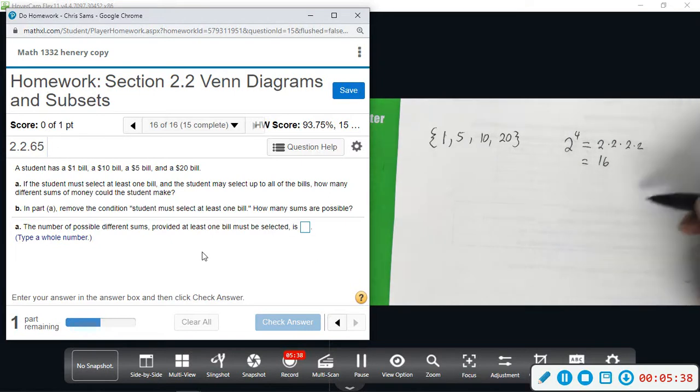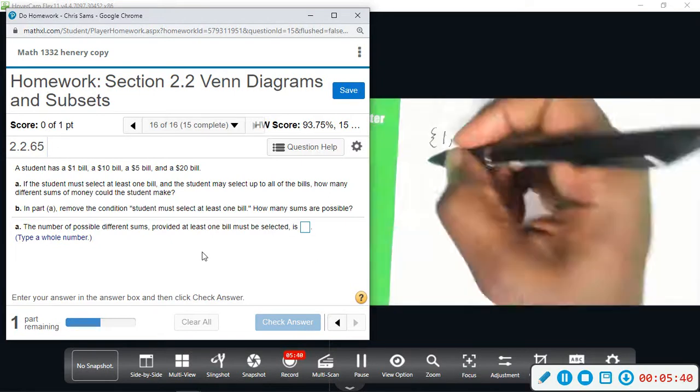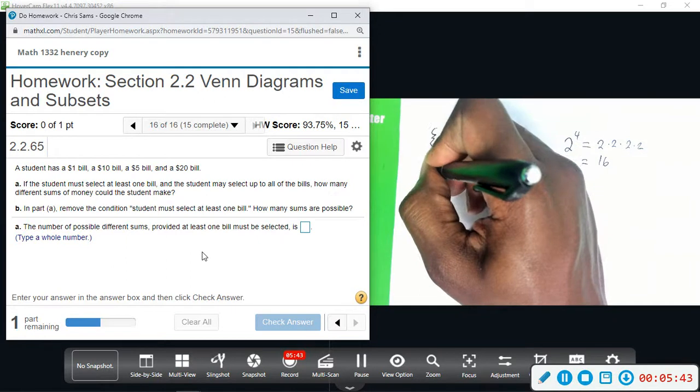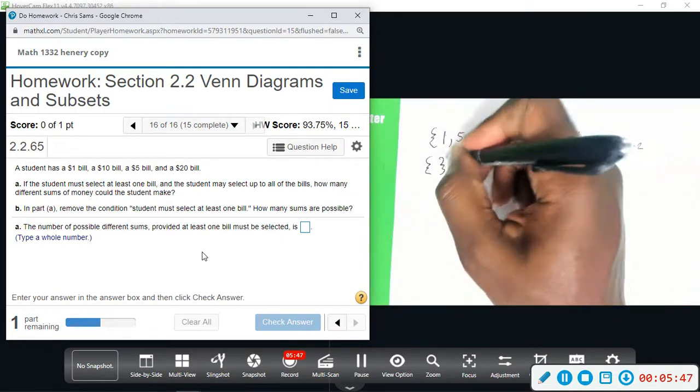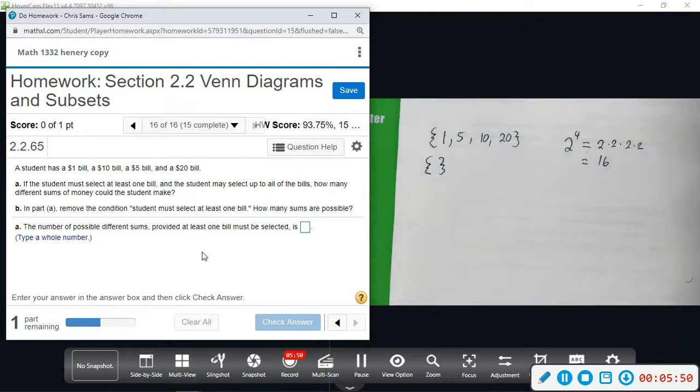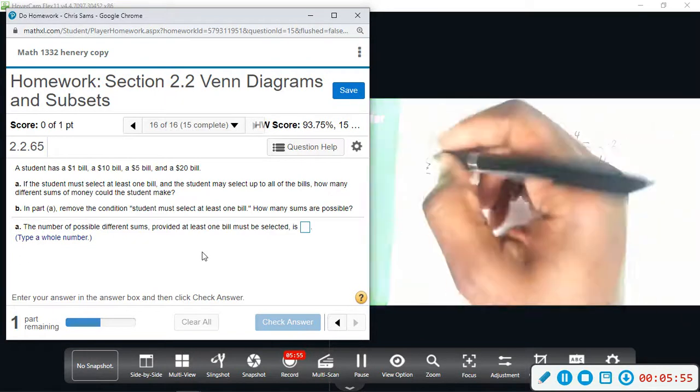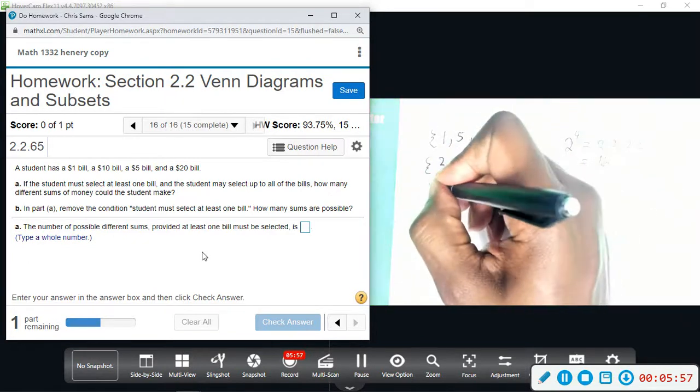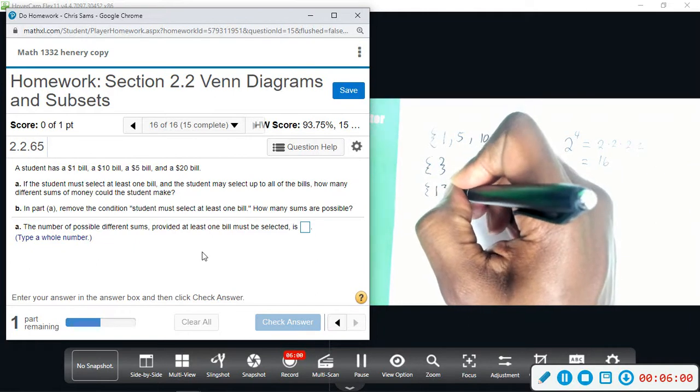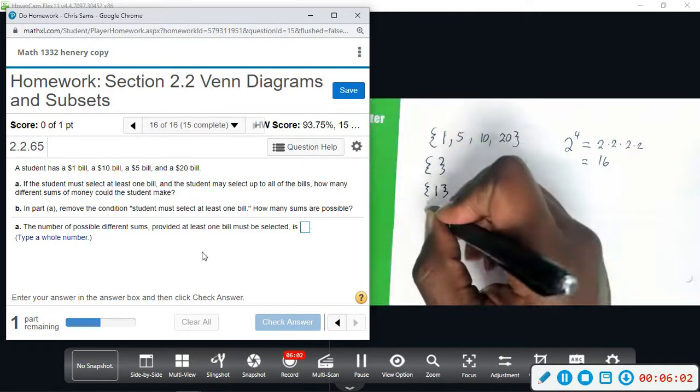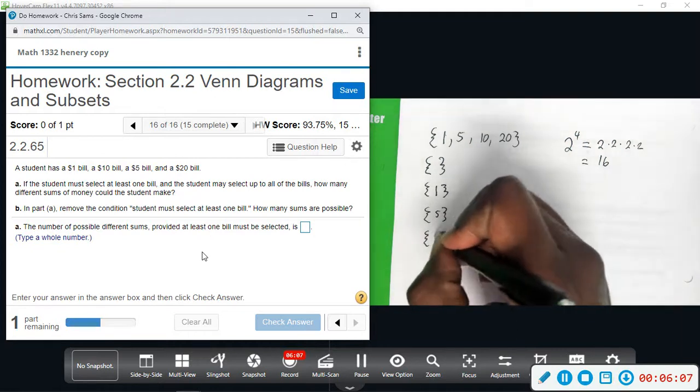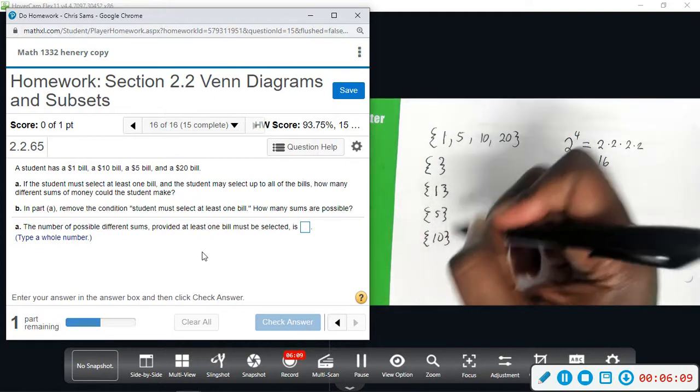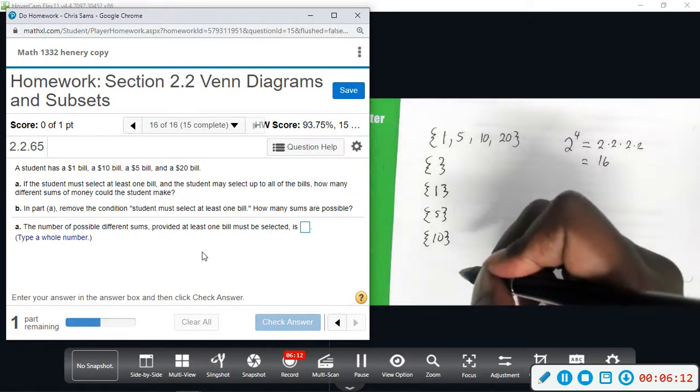So that means 1, 2, 3, or all four. So empty set, that means we're choosing nothing. And this is the case that we're not going to be considering, because we have to choose at least one bill. But it's going to be in the subset part of me showing you 16. So we have the empty set. We have each element individual: 1, 5, 10, and then 20. So this is choosing one bill.